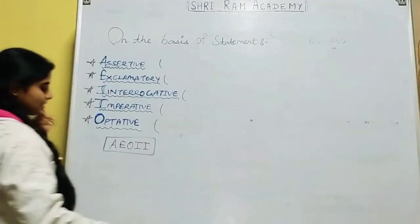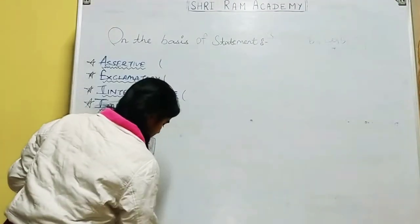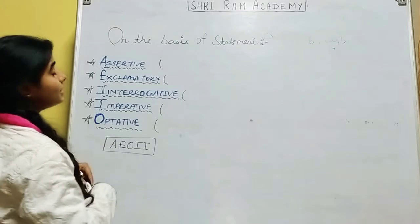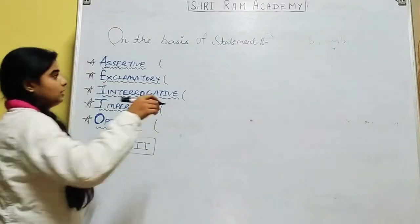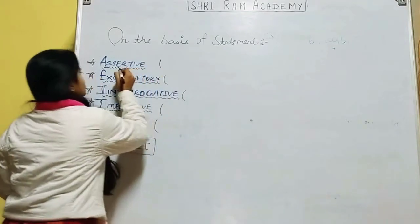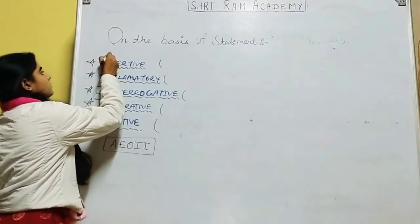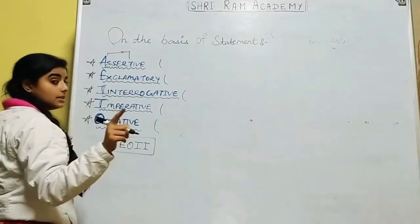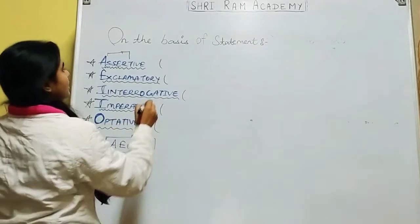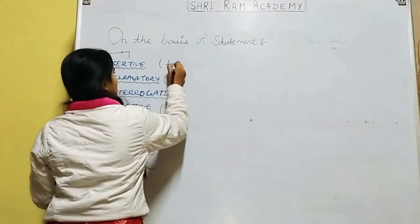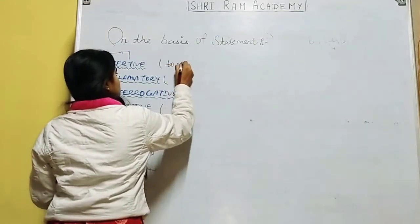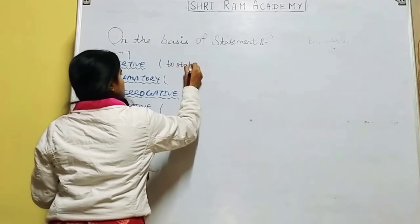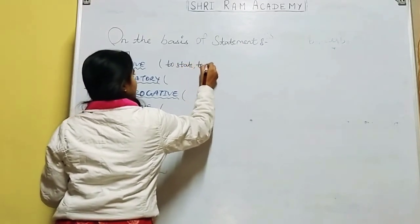So the first sentence type is the assertive sentence. Let me tell you — assert का मतलब क्या होता है? The word 'assert' used here means 'to state' or 'to declare'.